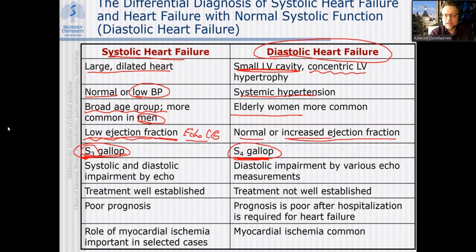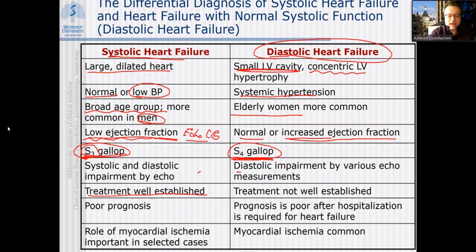Atrial overload produces increased oscillatory events — more intense vibrations of the atrial wall during atrial contraction. In systolic heart failure there will be both systolic and diastolic impairment on echocardiography; diastolic impairment alone will be the only finding in diastolic heart failure. Treatment is better established — diuretics, angiotensin receptor blockers, ACE inhibitors — for systolic heart failure; treatment is not well established except for cardiac transplantation in diastolic heart failure. Patients with systolic heart failure have poor prognosis, though transplantation in time may improve outcomes.